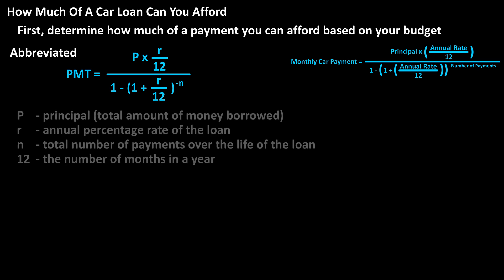In this formula, P is the principal, or the total amount borrowed. R is the annual percentage rate of the loan. N is the total number of payments over the life of the loan, which is the number of months in a year, 12.